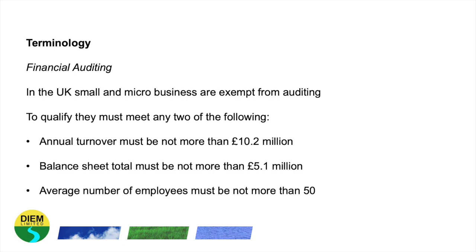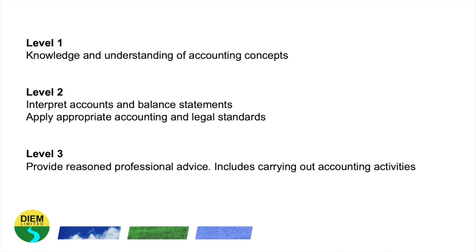So Level 1 of this competency looks at your knowledge and understanding of accounting concepts, which we've had a look at today. Level 2 of this competency is to interpret accounts and balance statements and apply appropriate accounting and legal standards. Level 3 is providing reasoned advice, including the carrying out of accounting activities. Level 2 and 3 are pretty specialised, so don't think that understanding accounts and perhaps preparing some financial statements as part of your job means you can do Level 2 and Level 3. Take heed — they are very specialised.